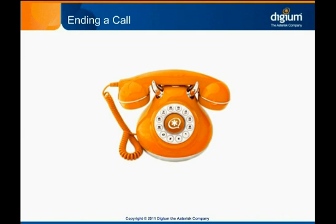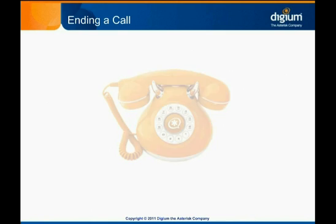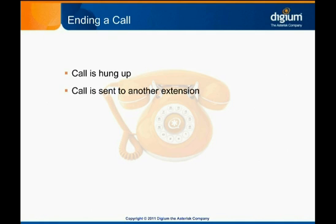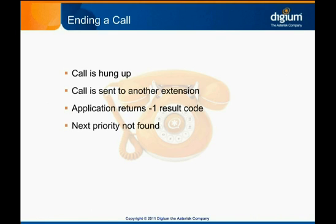Once a call enters an extension, it will continue to process down the list of commands in order of priorities until one of four things happens: the call is hung up, it is sent to another extension, an application returns a result code of negative one indicating that it failed to execute, or there is no command with the next higher priority.